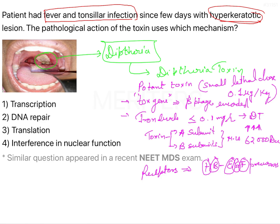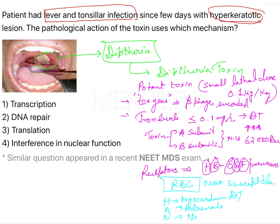All cells are susceptible to the action of diphtheria toxin except RBCs — red blood cells are not susceptible, which is important for exams. The highest affinity of diphtheria toxin is seen in MAN: M for myocardium, A for adrenals, and N for nerve endings.